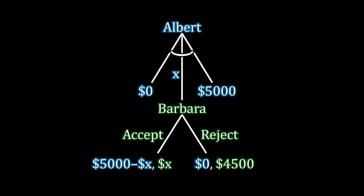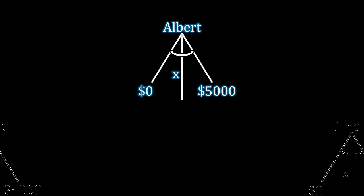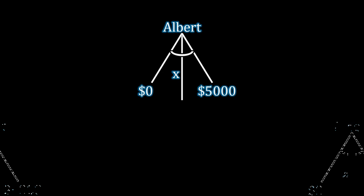There are two parts to this: we have Albert at the beginning and Barbara at the end. Looking at Albert's half — the top half of the game — at the very top we see Albert, indicating he is making the first move. Right below Albert's name, we see an arc between $0 and $5,000, indicating that Albert is choosing a value between $0 and $5,000, which we're going to call X, and that value is going to be the offer to Barbara.